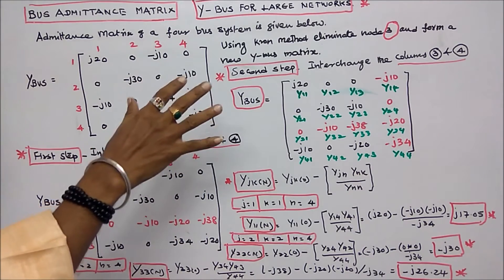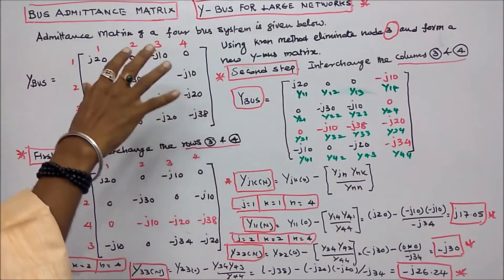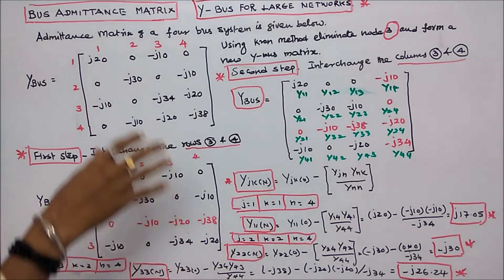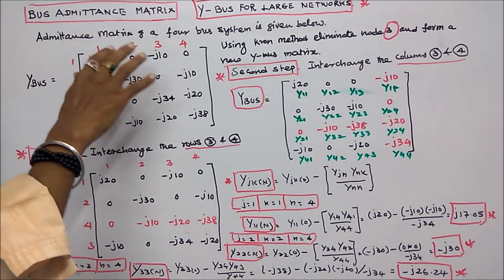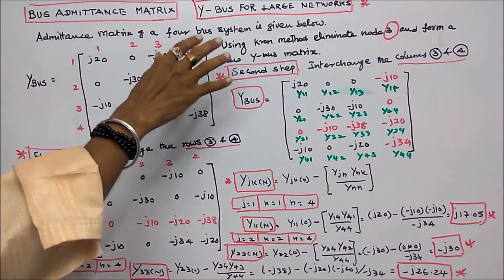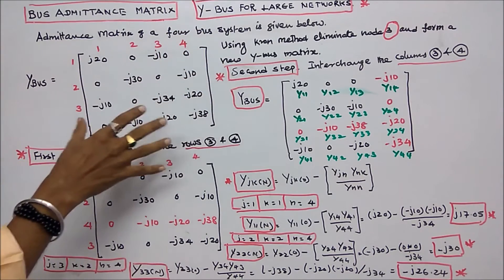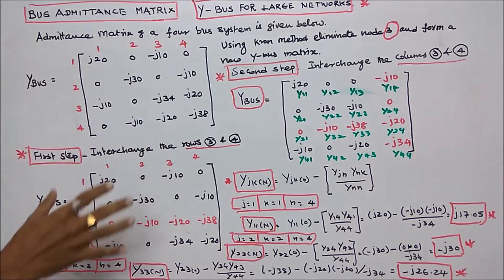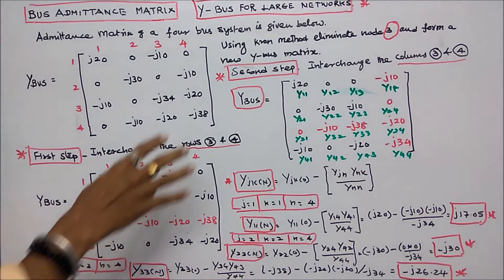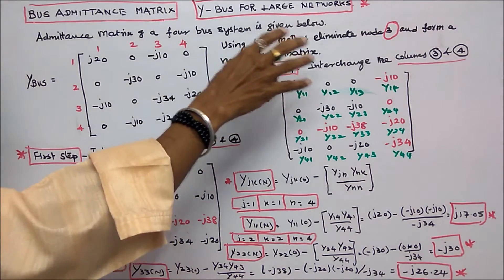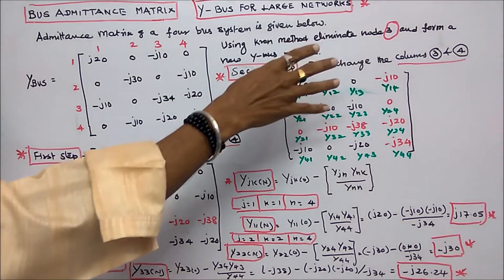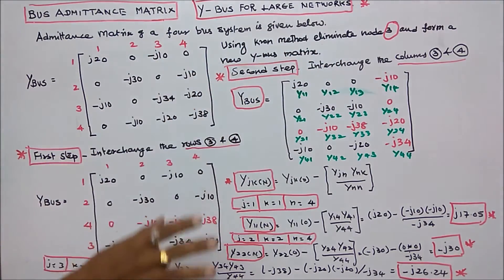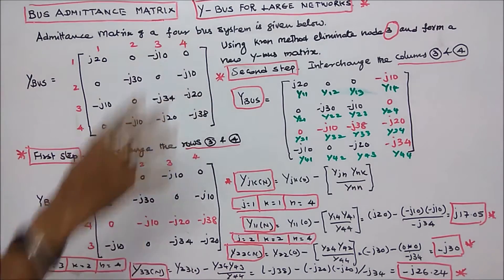In this class, we work out a problem on bus admittance matrix. The admittance matrix of a 4-bus system is given below — this is a 4 by 4 matrix. Using Kron's method, eliminate node 3 and form a new Y-bus matrix.